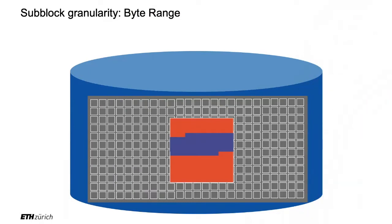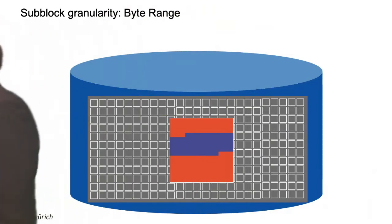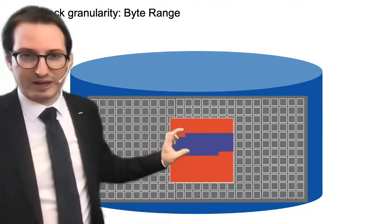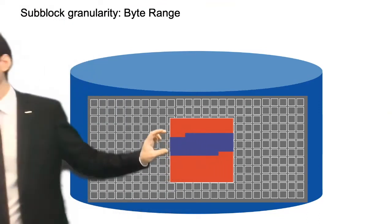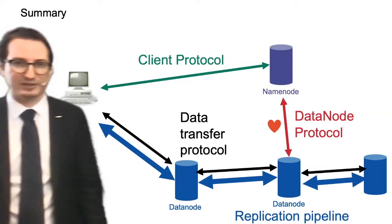Something that might sound counterintuitive: we said we don't have random access, yet we can still access a sub-part of a block — not the entire block — by requesting to read a certain interval. However, do not make the mistake of thinking that gives you random access, because it is still slow. We will see in a few weeks, in the context of MapReduce, why being able to read just part of a block is actually useful.